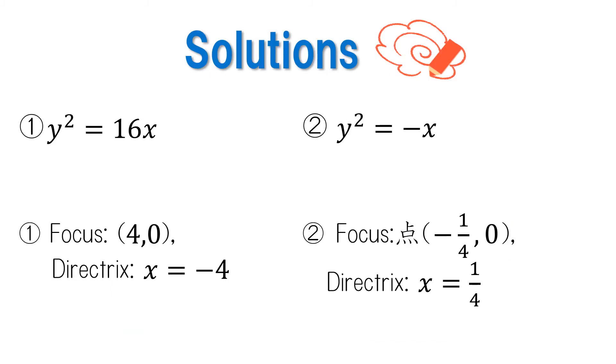Now, let's check our answers. The answer to number 1 is that the focal point is the point (4, 0), and the directrix is the line x equals negative 4.